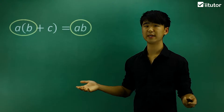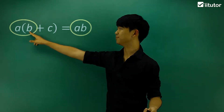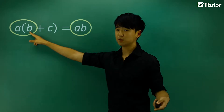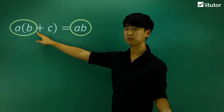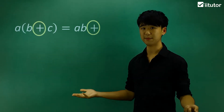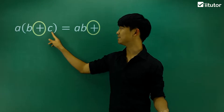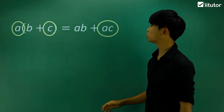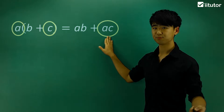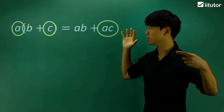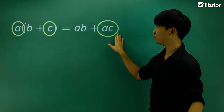Look at a and then multiply it to b — the first term in the bracket. Well, a multiplied by b is just ab. Now there's a plus sign, so we keep the plus and multiply a and c. That gives us ac. So this is effectively how we expand these brackets, and this is the expanded form: a(b+c) = ab+ac.